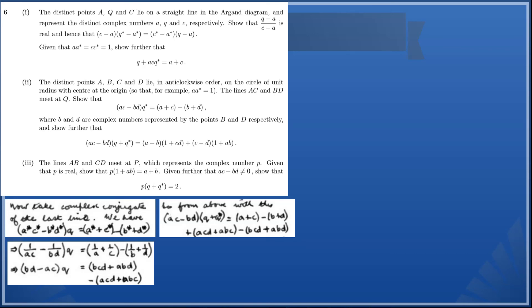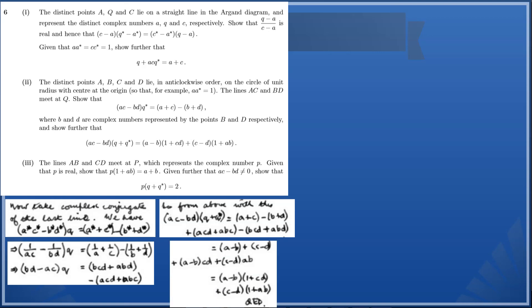So now we can see that we've got (a+c) - (b+d) + (acd + abc) - (bcd + abd), and this continues here to give us our required result.